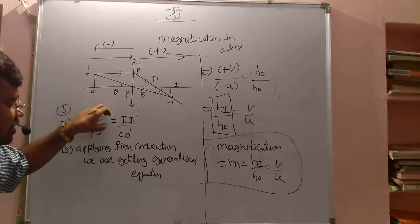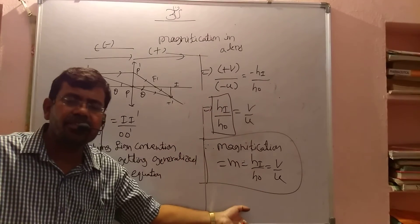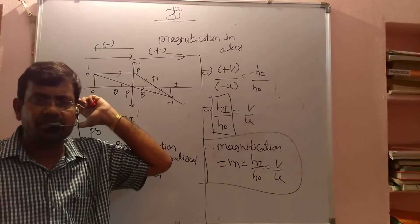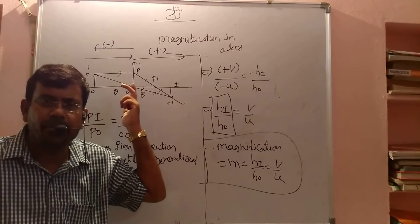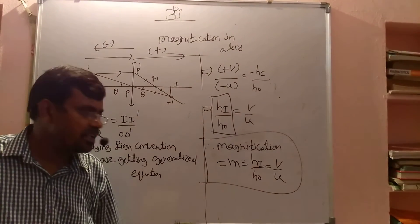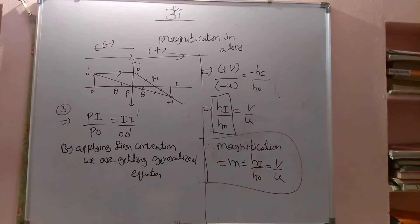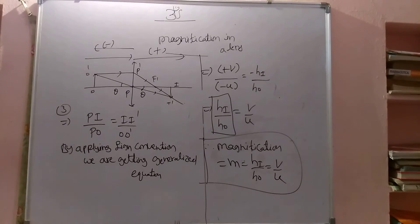It may be a concave lens or a convex lens, any position. From this particular condition, by applying sign convention, we derived the generalized equation. And from the generalized equation, again by applying sign convention, we can go back to any particular case — magnified, diminished, or virtual image. That is the process. Thank you.